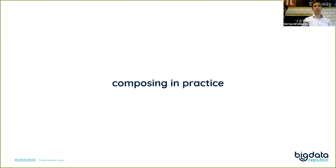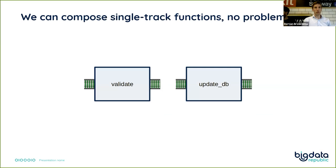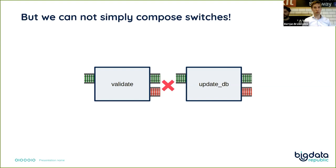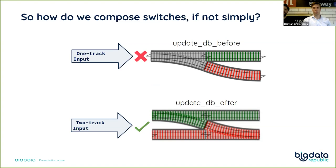Composing in practice: we can compose single-track functions as long as the output type of validate matches the input type of update DB. The same goes for double-track functions. However, validate has a single-track input and a double-track output, while update DB has a single-track input. So how can we compose those two? If we put a success into update DB, it won't know how to deal with that — it expects a request, not a success, and definitely not a failure. So we need a bit of machinery.